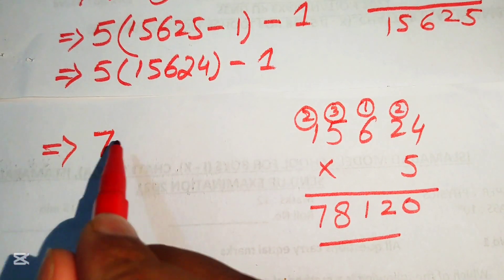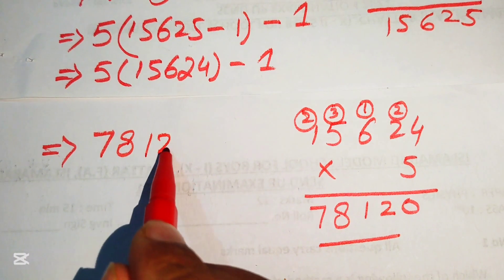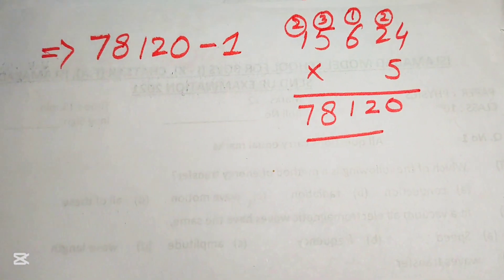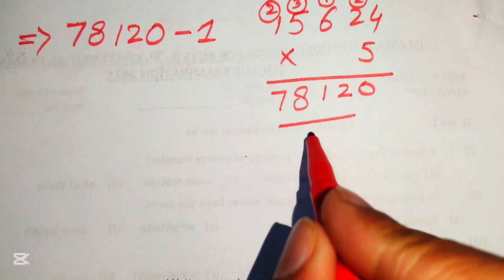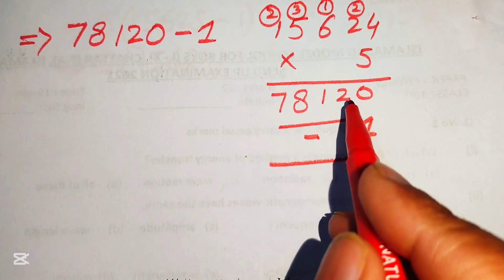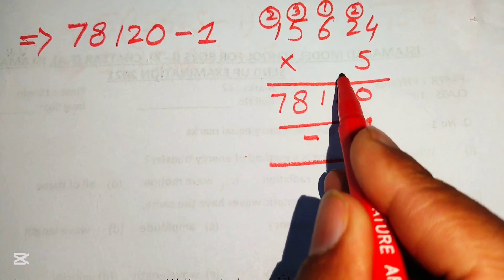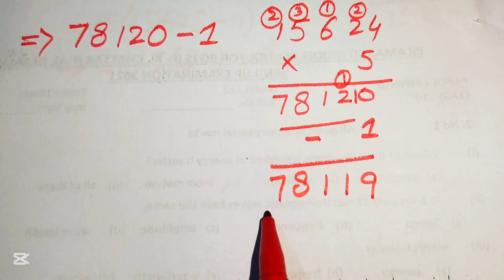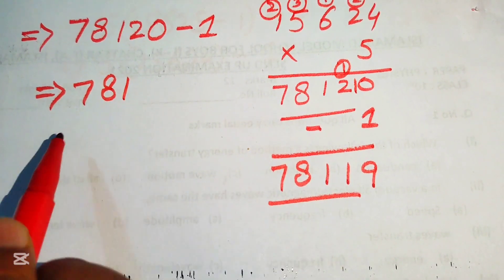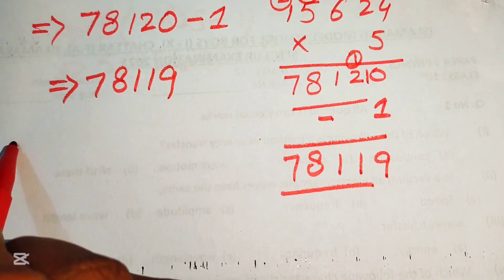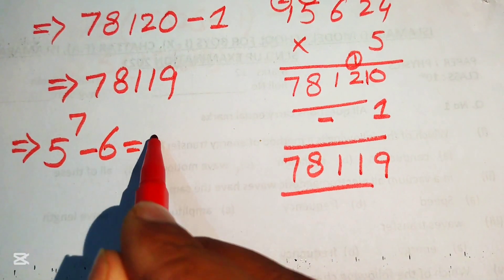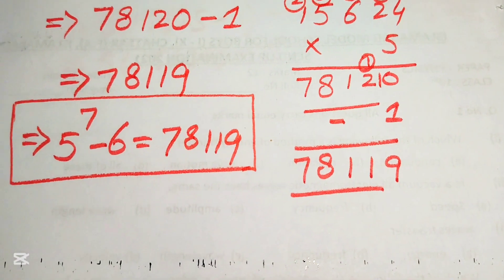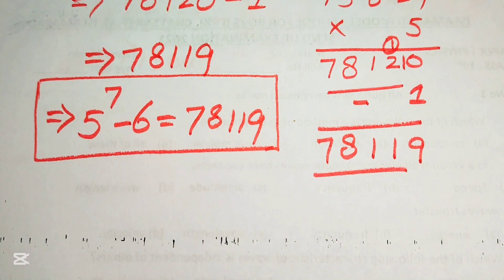Substituting this value, the expression becomes 78120 minus 1. To subtract 1 from 78120: we get 78119 as our result. So the final answer is: 5 to the power of 7 minus 6 equals 78119. This is the final simplified form of the given expression. Thank you so much for watching this video — please subscribe to my channel for more exciting videos.